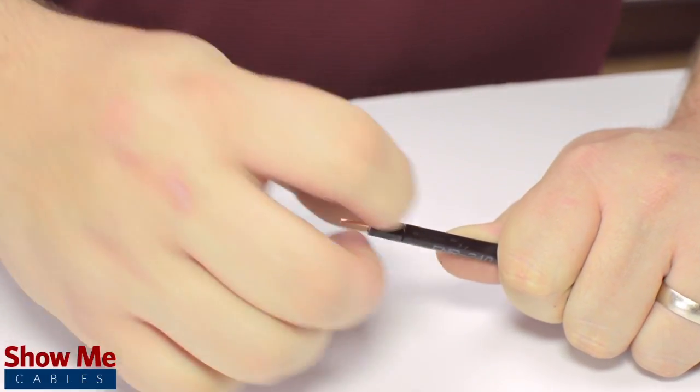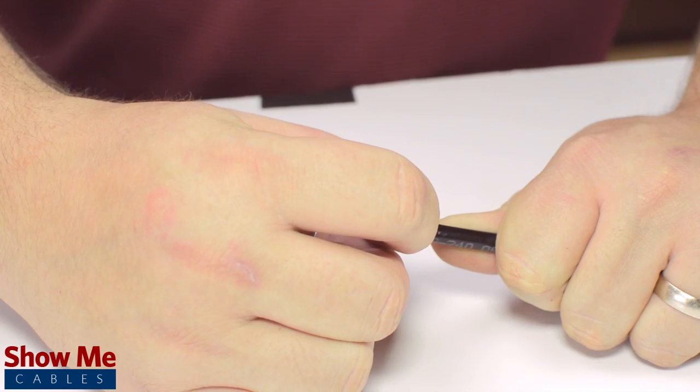The advantage of using a cable stripper is that it will strip back the jacket and dielectric at the same time.